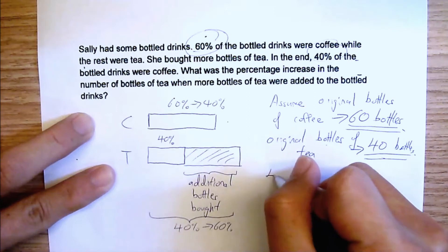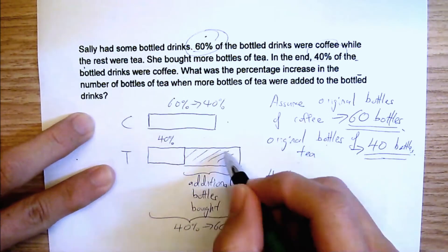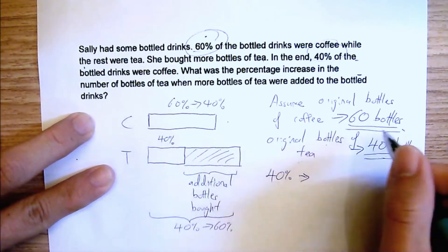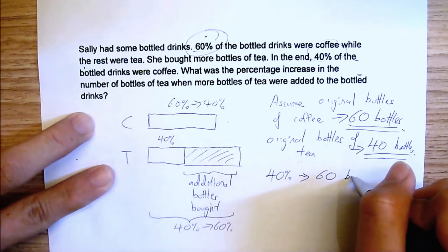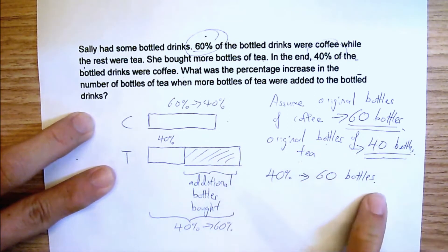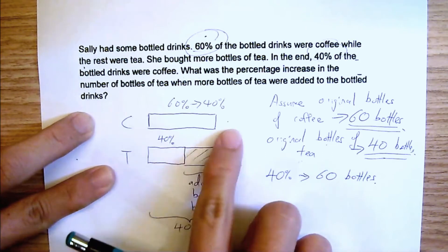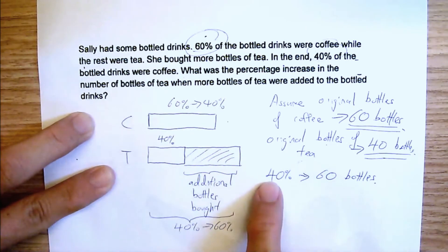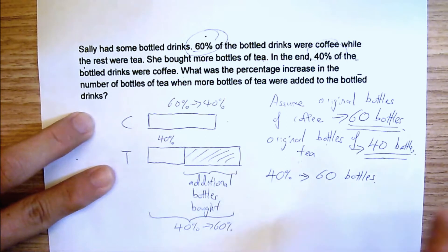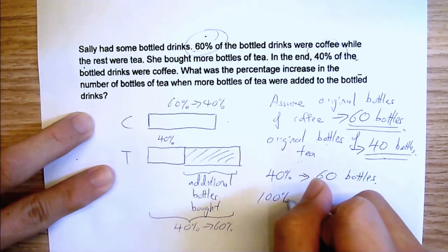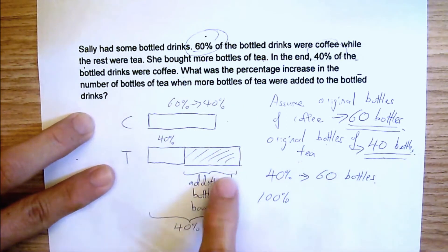Now, I can write this. 40% of all the bottles after adding on this one, this 40%, is 60 bottles. Since there is 40 bottles, I want to find out the total number of bottles here. Since this 40% of all the bottles is 60 bottles, I could have found out 100%. And this 100% will be the total bottles after additional bottles were bought.